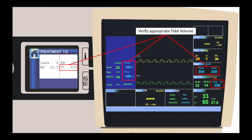So the leak is not zero, but it will display zero here unless there is more leak than what's intended. If this doesn't say zero, there is more leak than intended, and the whole circuit should be investigated for any breaks, any evidence of leak, including deflation of the endotracheal tube cuff.